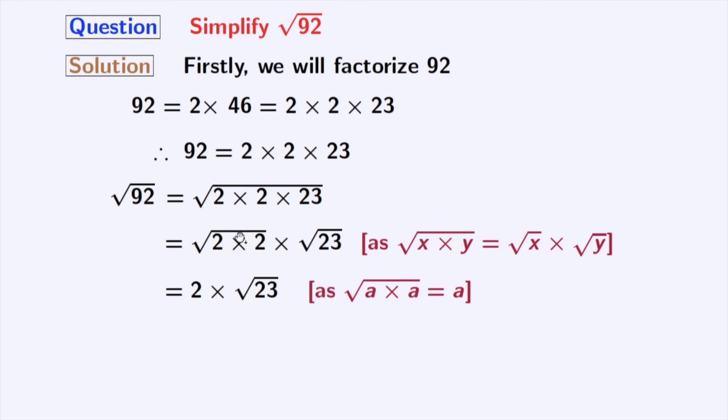After simplification, we get 2 root 23 and this is our final answer.